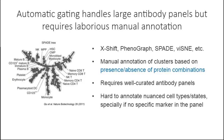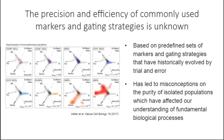Another challenge is that these studies have been based on predefined sets of markers and gating strategies that have historically evolved by trial and error. The precision and efficiency of those commonly used markers and gating strategies is unknown in most cases, which has led to misconceptions on the purity of isolated populations, ultimately affecting our understanding of fundamental biological processes.